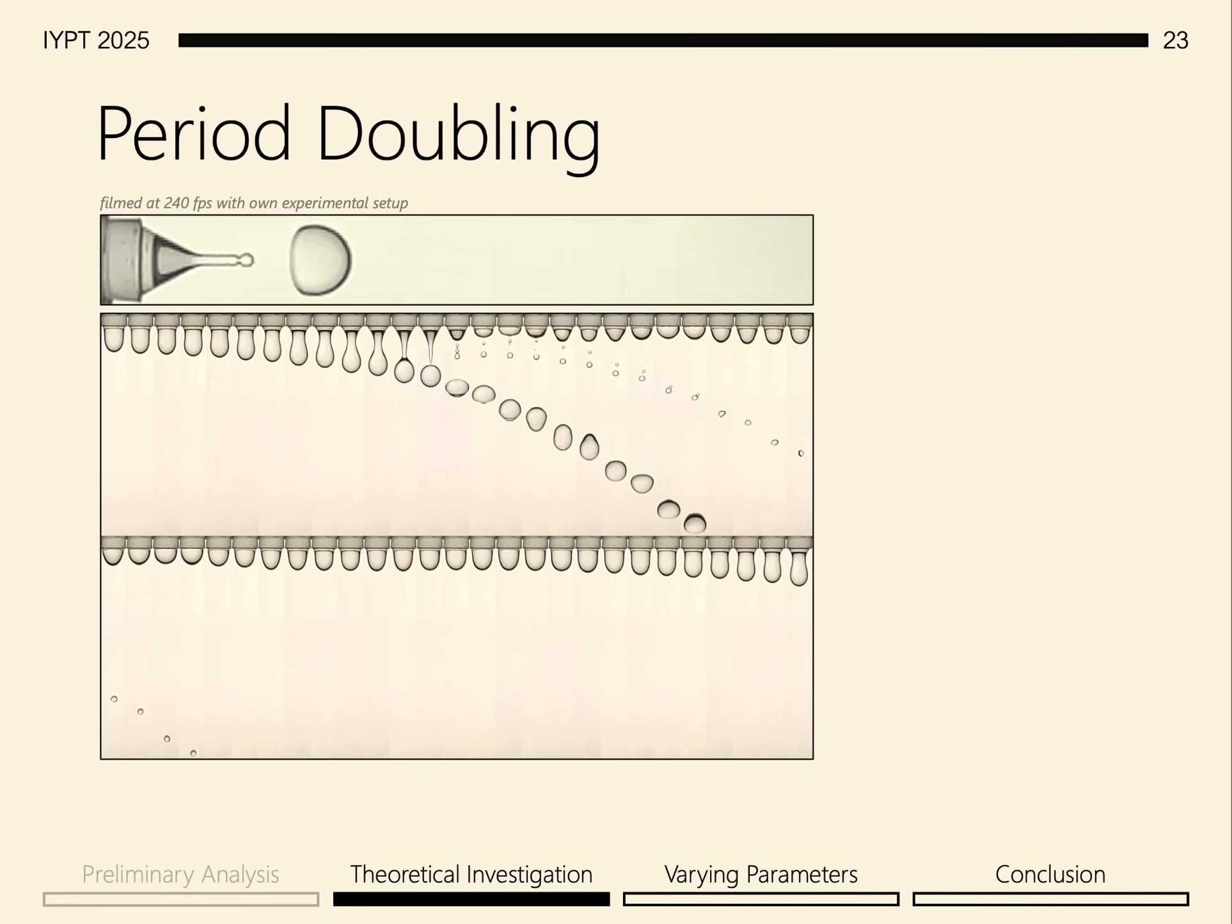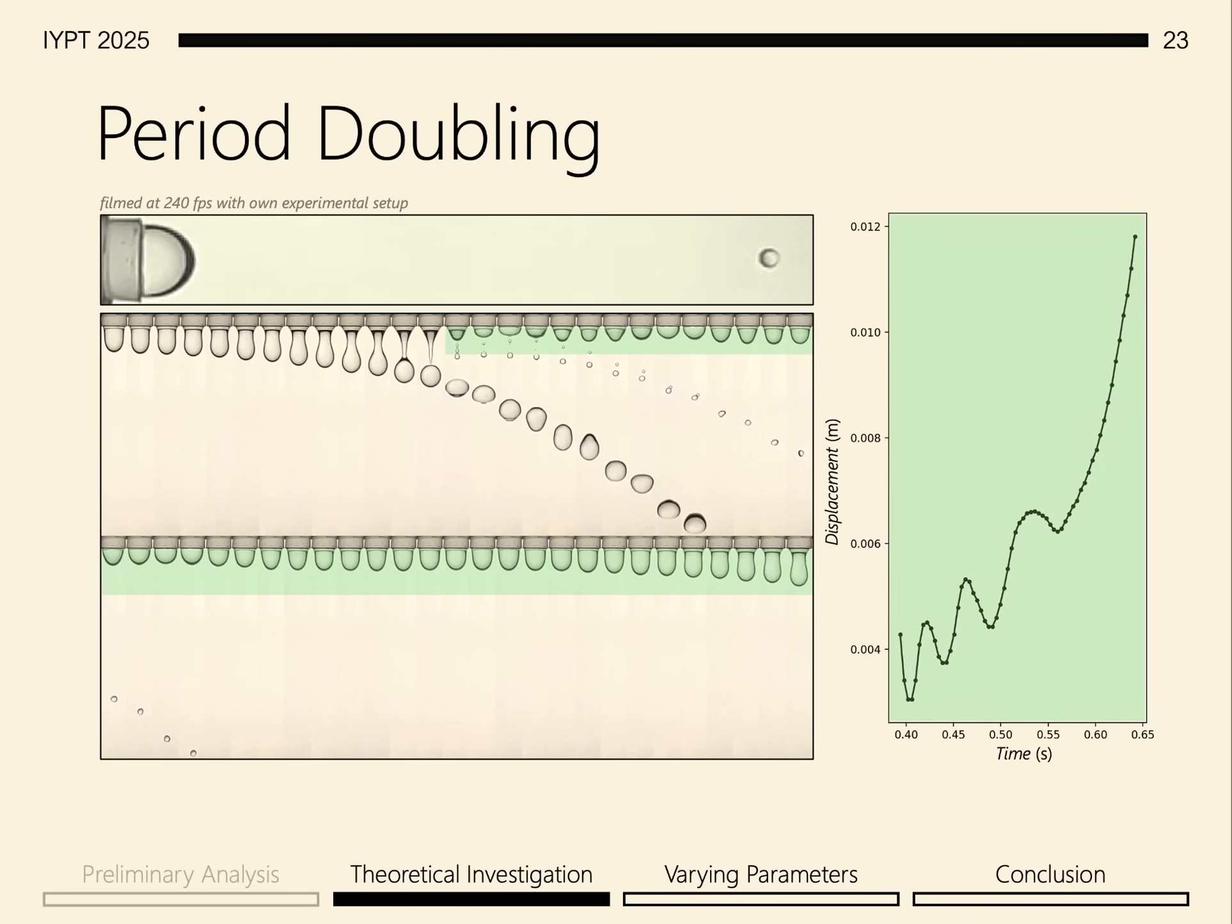We can explain this by closely inspecting the shape of the water. Notice that when a droplet falls off, there's some residual water that oscillates with decreasing amplitude over time. By plotting the tip of the residual water, we notice a kind of periodic motion with increasing average displacement due to the increase in mass, lowering the position of the drop over time until it falls off. We can see that it takes around 0.2 seconds for the oscillation to dampen.